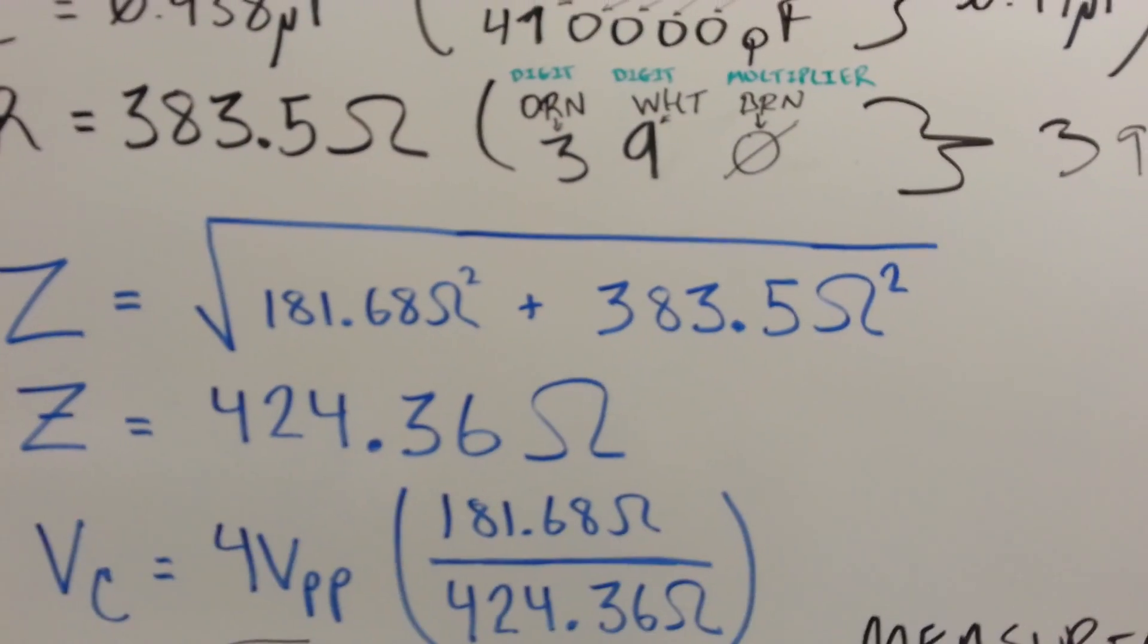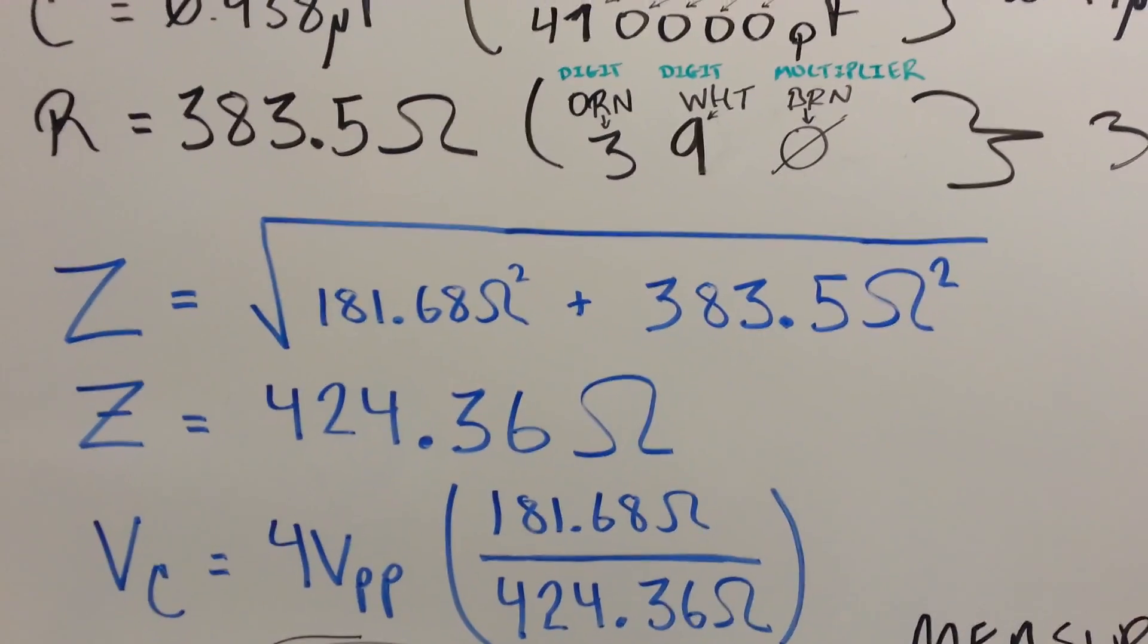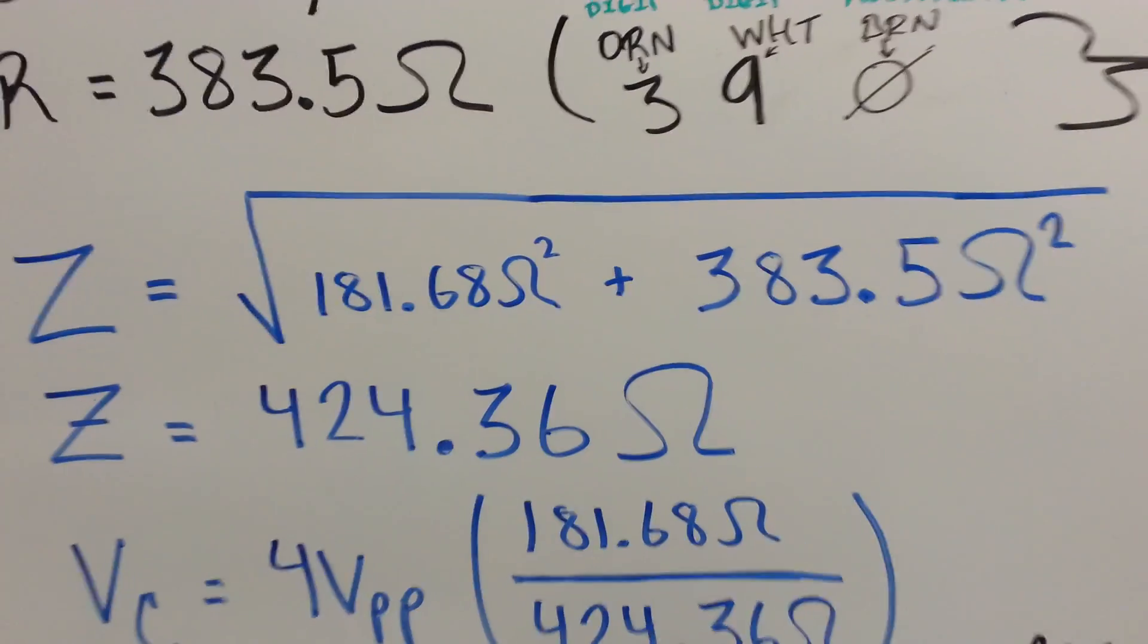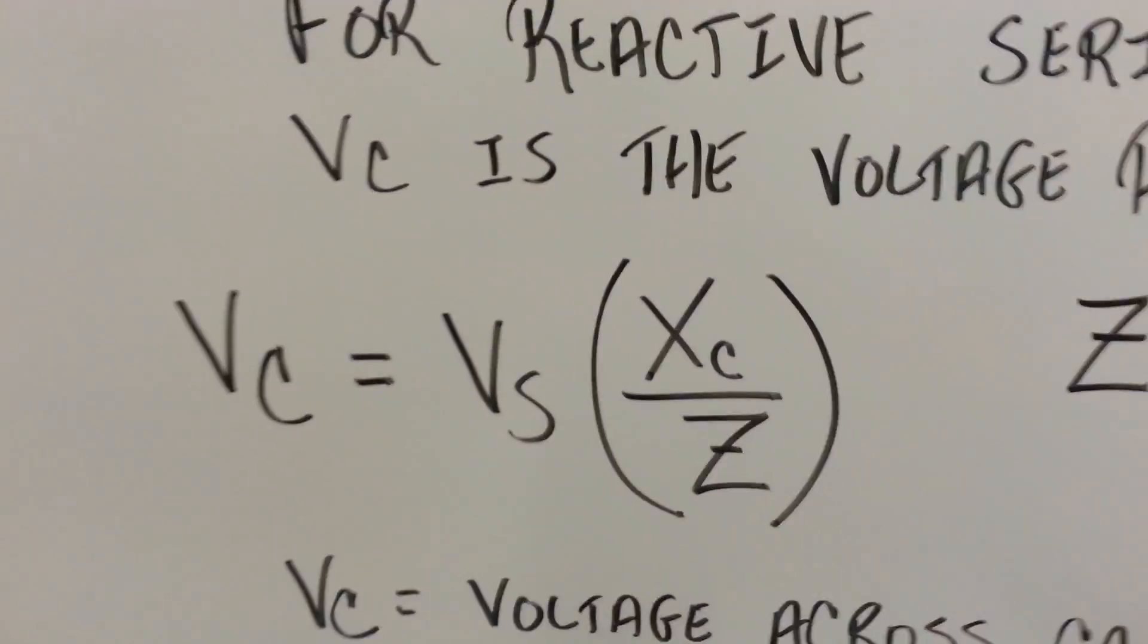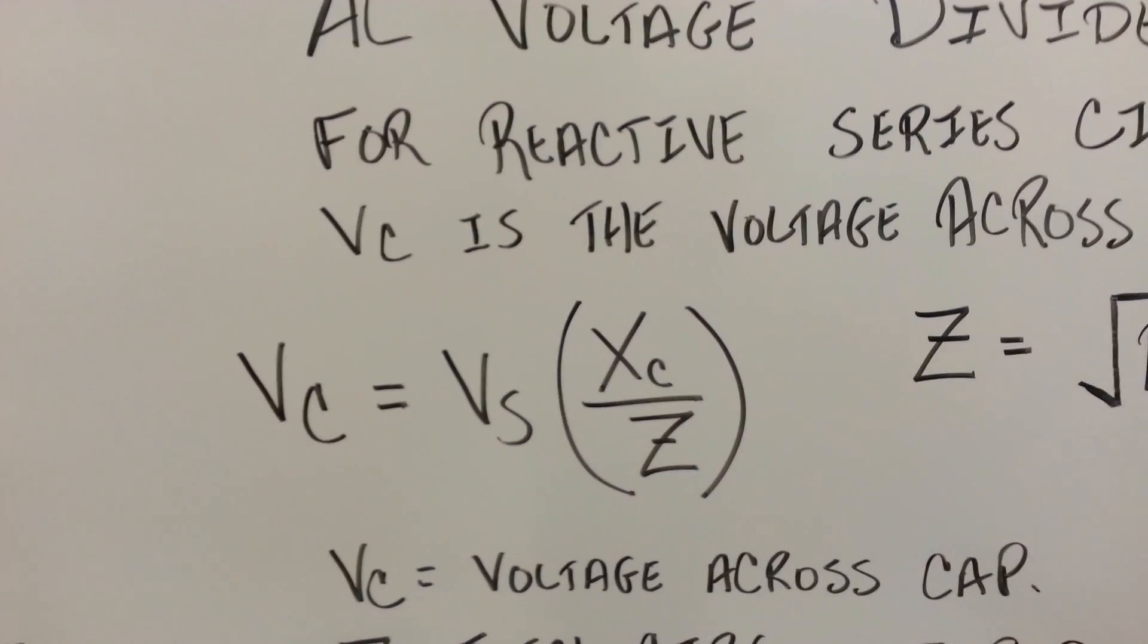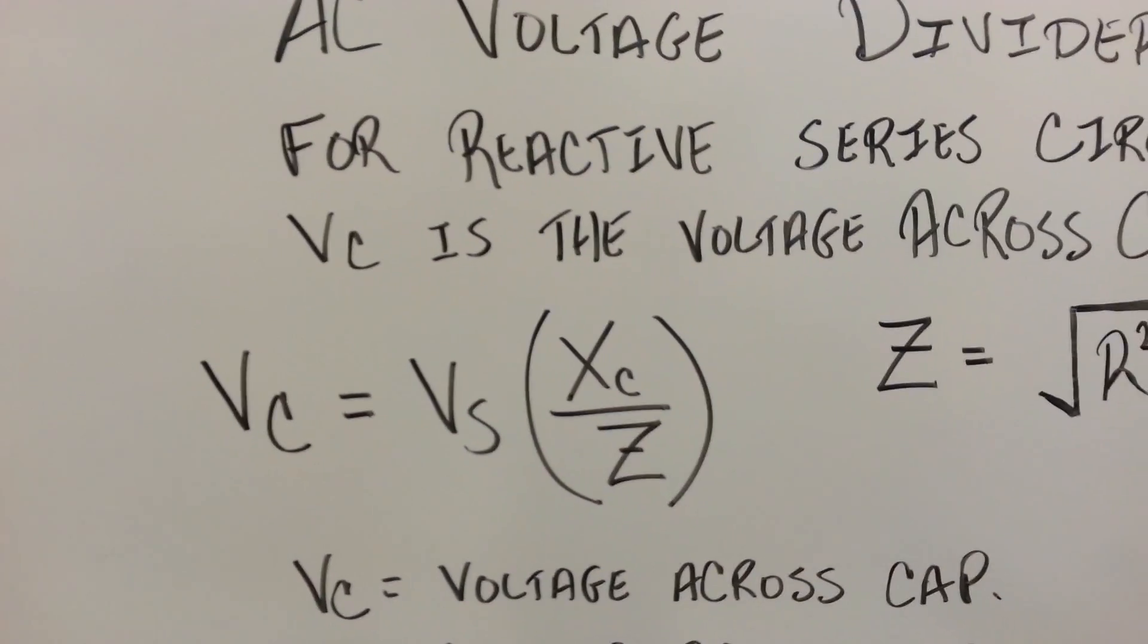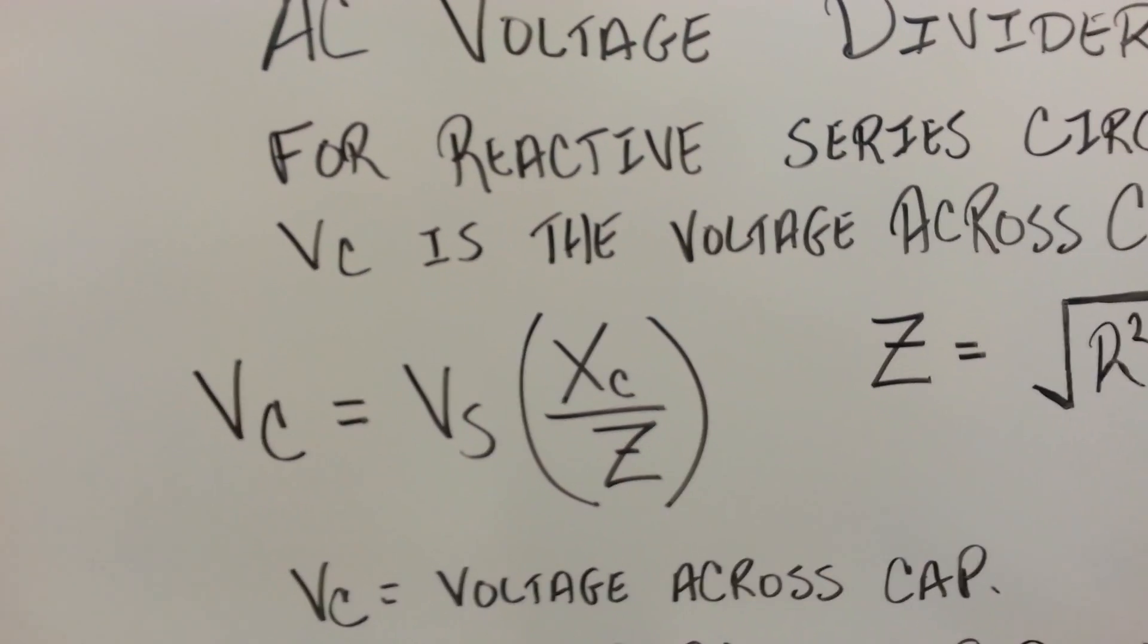So I used the actual values to find the impedance, or the measured values. And I found the impedance was 424.36 ohms. So the AC voltage divider, I take the capacitive reactance, divide it by the impedance, and then multiply that by the source to get the voltage across the cap.